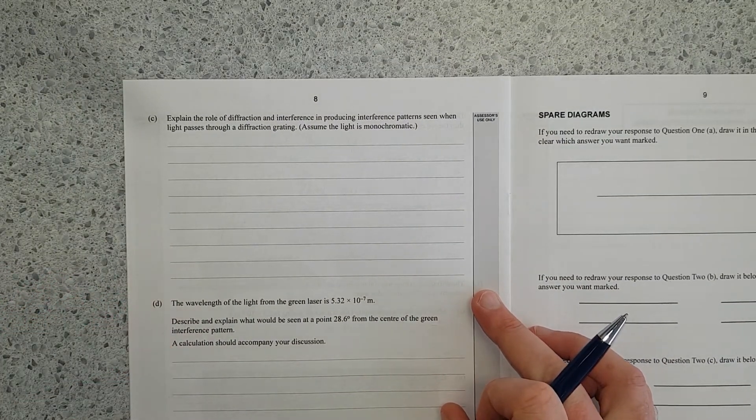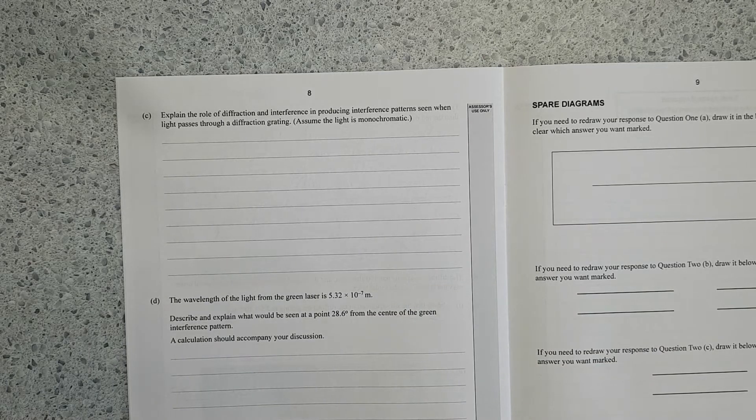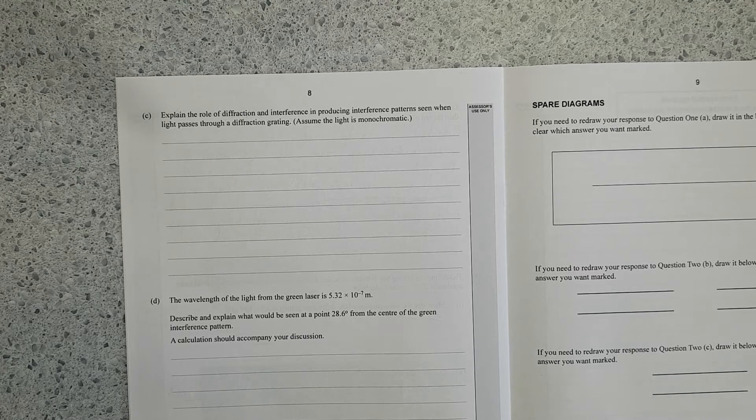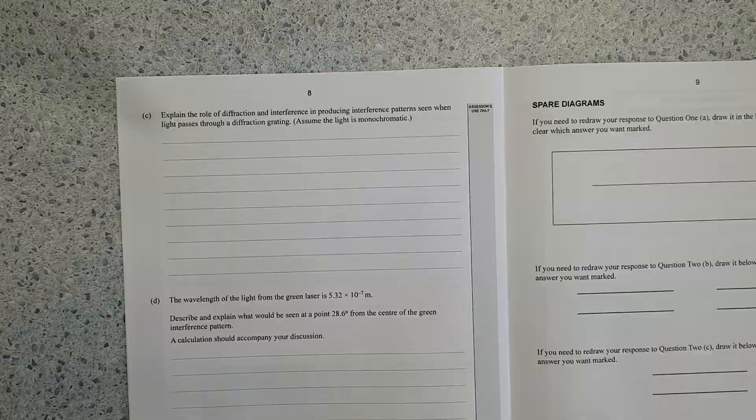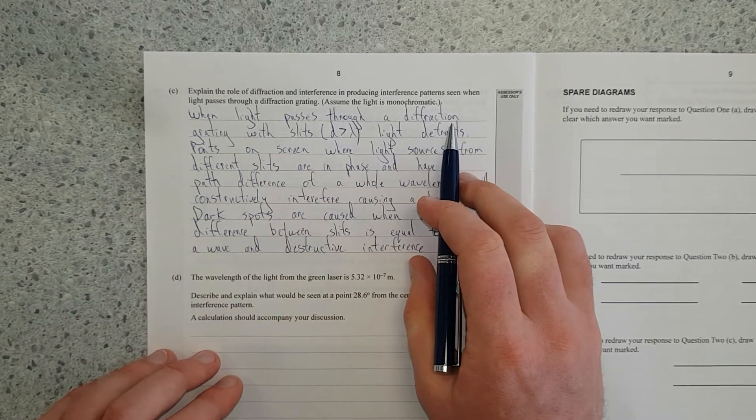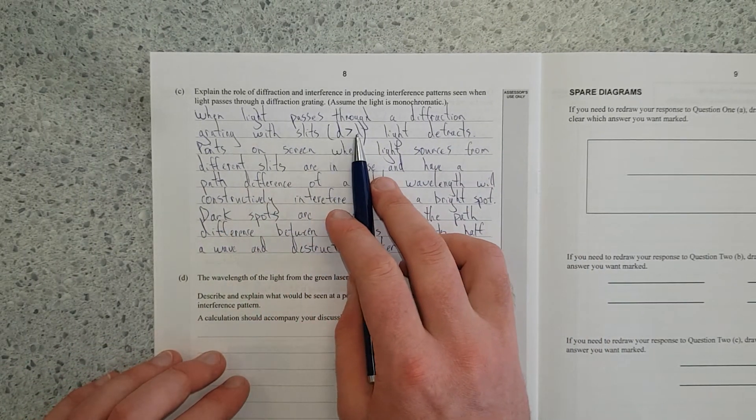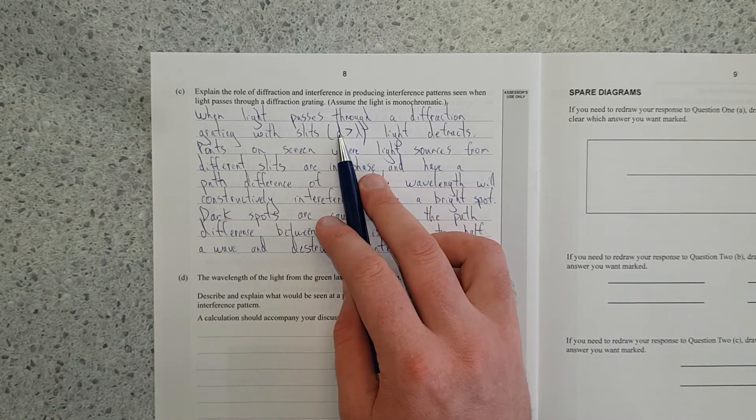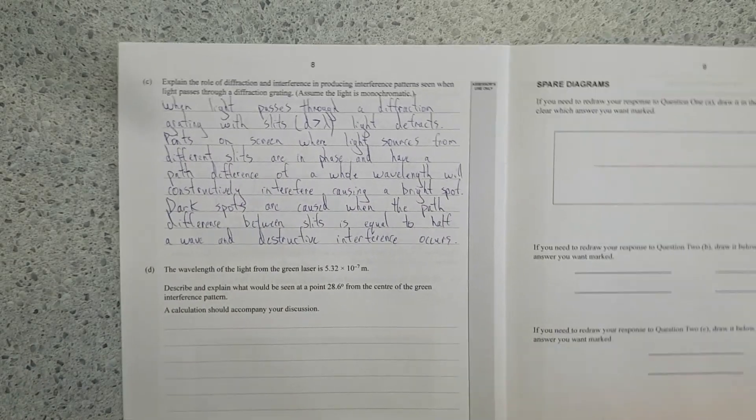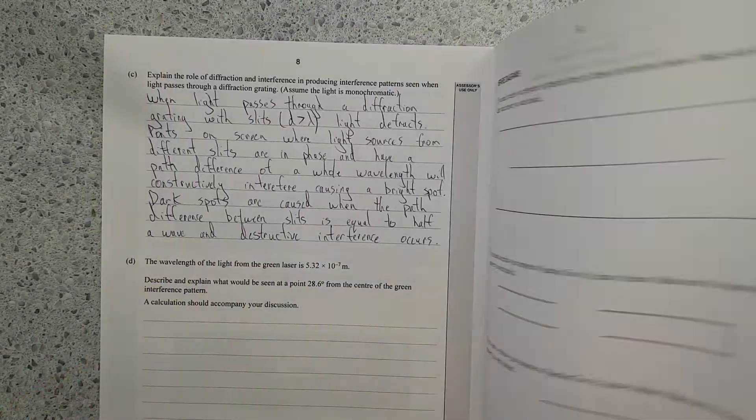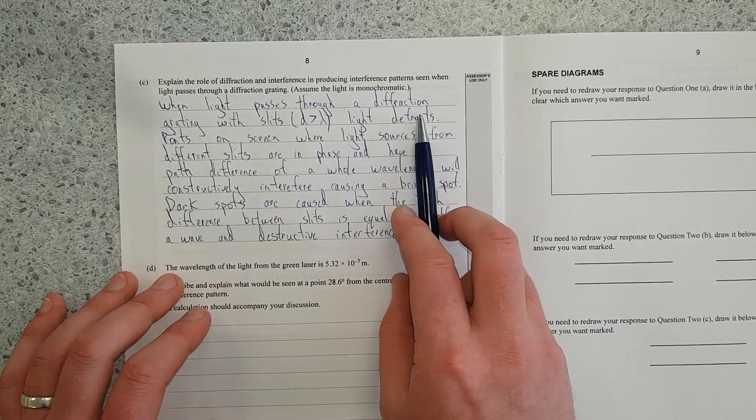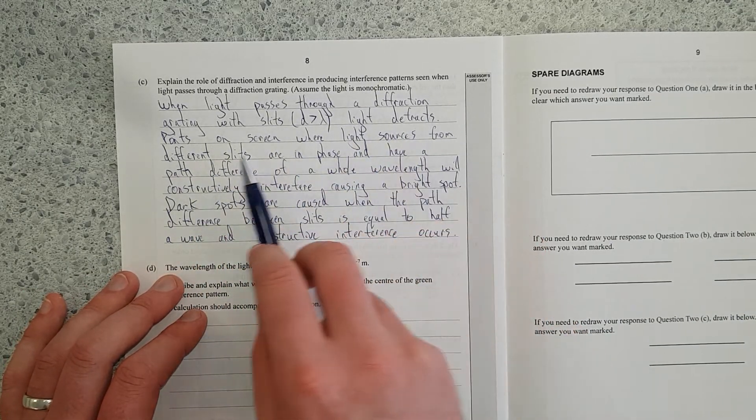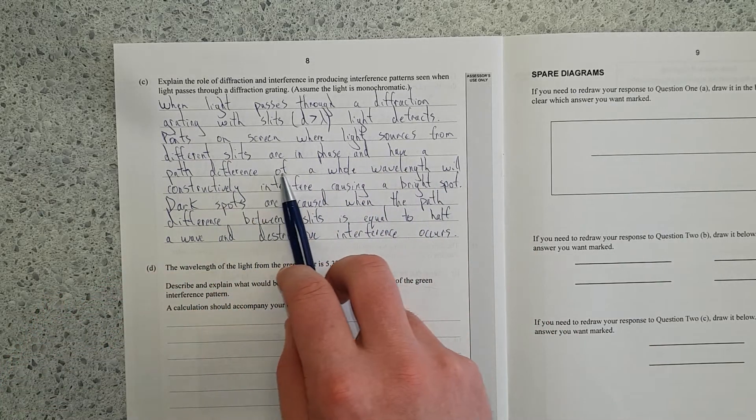Explain the role of diffraction and interference in producing interference patterns when light passes through a diffraction grating. Assume the light is monochromatic. I'll just pause and write an answer then and discuss. When light passes through a diffraction grating with slits slightly larger than the wavelength, light diffracts. That's a year 12 concept, but whatever.